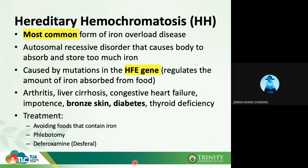In hereditary hemochromatosis, the body has a mutation in the HFE gene, which regulates the amount of iron absorbed from food. When the HFE gene is impaired, iron is excessively reabsorbed and deposited in parenchymal cells, which can destroy organs — particularly the liver, heart, and pancreas.